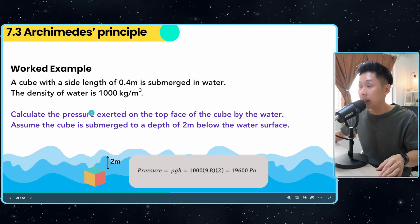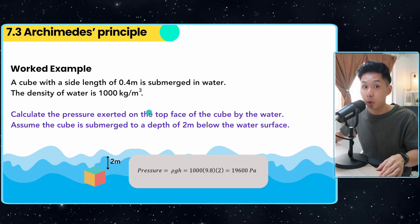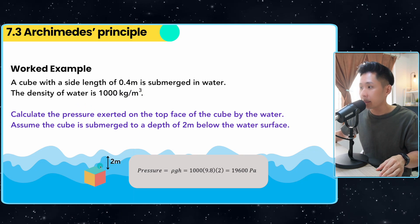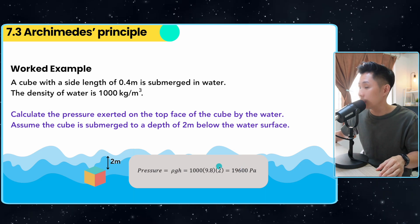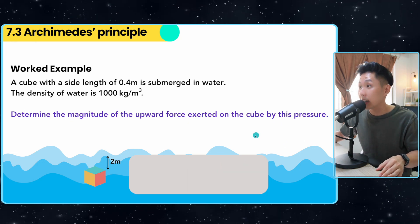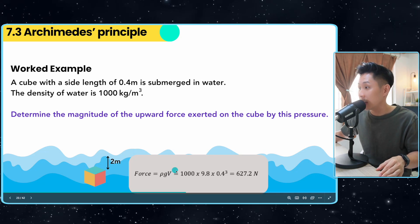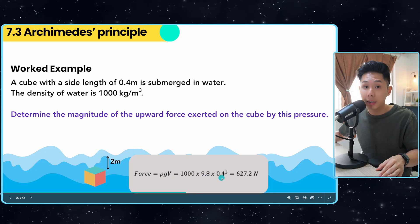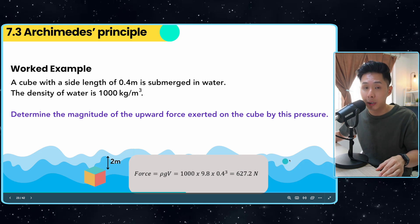Now let's look into a worked example of this principle. Say a cube of length 0.4 meters is submerged in water and that's the density. What's the pressure at this point? In this case, I can just use the ρgh formula, substitute 2 into the equation. The second question asks for the upthrust. What we learned just now is that we can use the formula ρgV, 1000 multiplied by 9.8 and the volume can be calculated using 0.4 cubed and you get the amount of upthrust.